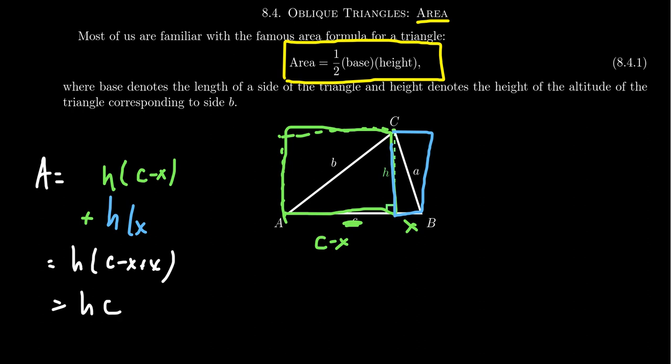You end up with h times c here. So again, the altitude times the base. This, of course, would give you the area of the rectangles. So we need to take half of that. And so you end up with this one half, the height, the altitude there, and the base c.